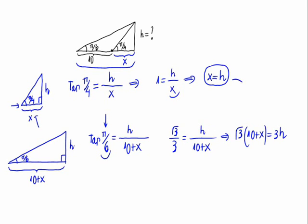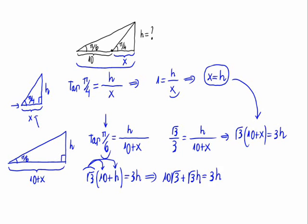If we substitute the value of x we already found, we would have the square root of 3 times 10 plus h is equal to 3 times h. Applying distributive property, we have 10 times the square root of 3 plus h times the square root of 3 equals 3h.